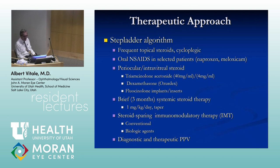Then periocular and intravitreal steroids. Brief systemic steroids — oral prednisone, usually about 1 mg/kg tapering. Then the early implementation of steroid-sparing immunomodulatory therapy in patients that are not responding or developing side effects. And finally, there is a role for vitrectomy in uveitis, although that is not well-defined therapeutically.